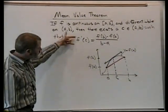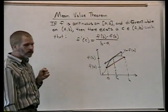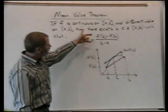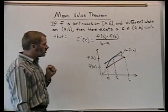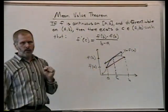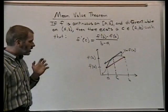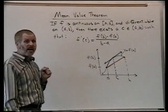f'(c) is the slope of the tangent line to the graph at c, and [f(b) - f(a)] / (b - a) is the slope of the secant line joining points (a, f(a)) and (b, f(b)).